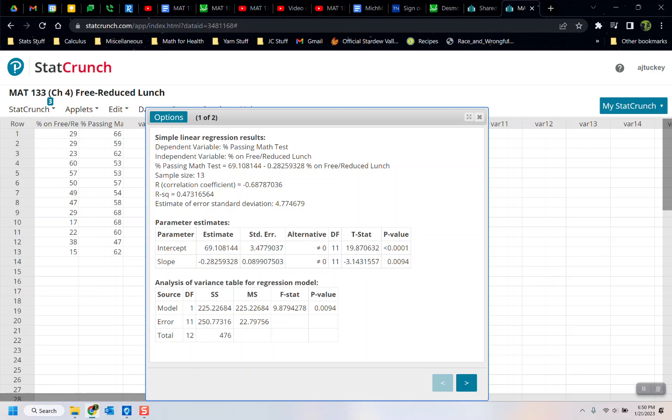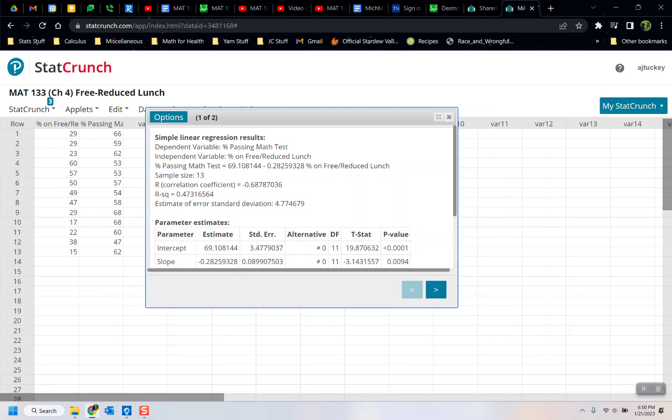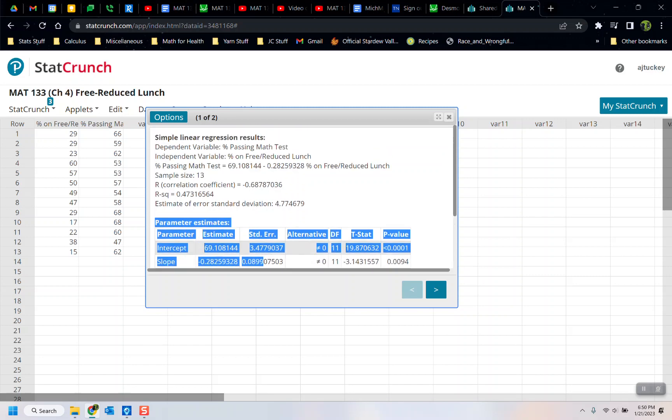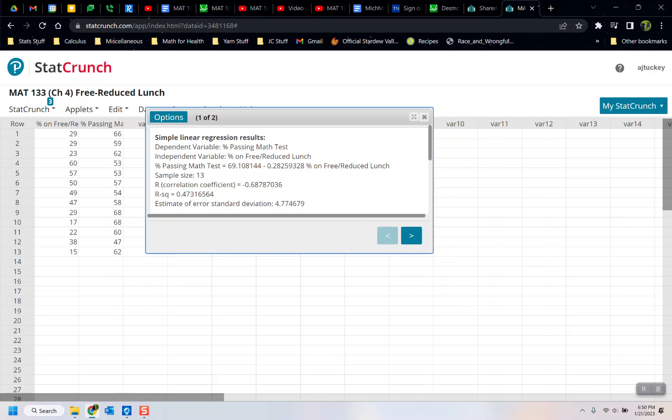In that huge window, we don't need the bottom box at all. We don't really need the center box either, other than it tells us slope and intercept. But what it's asking me for right now is the R-squared value, which is right here. R-sq stands for R-squared.